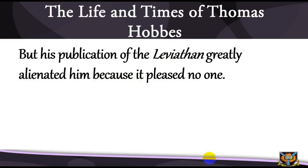Therefore Hobbes fled secretly to London, where he made submission to Cromwell and abstained from all political activities. Hobbes was taken back into favor at the Restoration. The King awarded him a pension of £100 a year, to the displeasure of both Parliament and the Lord Chancellor Clarendon, who saw him as an atheist. A committee of the House of Commons set up to inquire into his atheistical writings indicted him, and he was banned from further publications in England. Hobbes died in 1679.